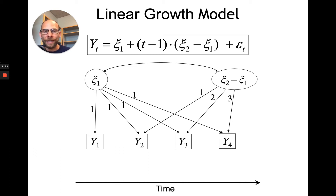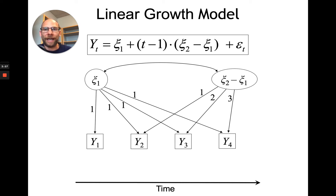These two factors are allowed to correlate, so we estimate a covariance between them. This indicates whether there's a correlation between the initial trait value at time one and change over time. For example, individuals who are already higher on IQ at time one might increase more, or they might not change as much because they're already at the ceiling. Depending on your data, there might be a positive, negative, or zero correlation between intercept and slope, and that's an interesting parameter to look at.